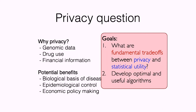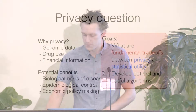There are sort of two goals. One: what are the fundamental trade-offs between privacy and utility, broadly defined — how useful can my data be versus how much privacy can I provide you? And two: actually developing optimal and useful algorithms for releasing information or discovering things while protecting the privacy of people who, say, carry cell phones.